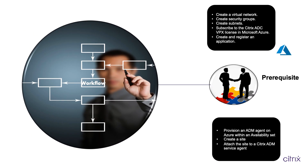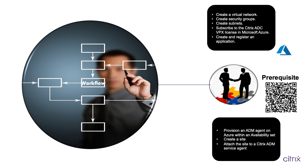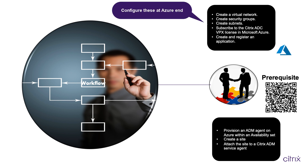Before moving to the actual deployment, let's look at the pre-entry steps to be done at both Azure as well as Citrix end. For more details on prerequisites section, refer our Citrix docs by either clicking on the link mentioned or scan the QR code. At Azure end, firstly you need to set up the Azure infrastructure with a VNet in the desired resource group, subnets and security groups — one for each management, client and server — with appropriate ports opened. Make sure that the security group allows the Citrix ADM agent to be able to access the Citrix ADC.